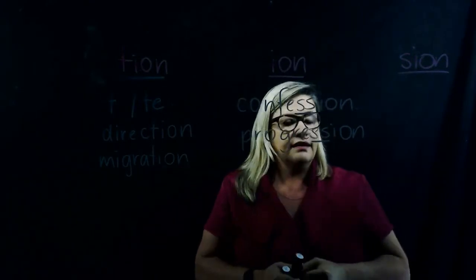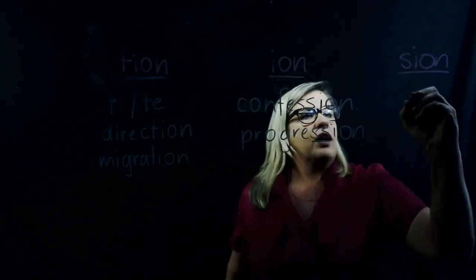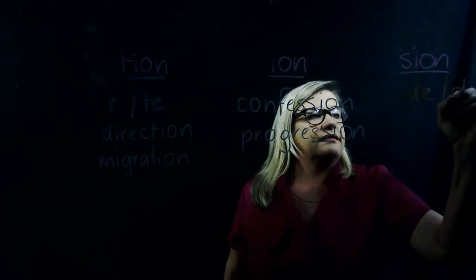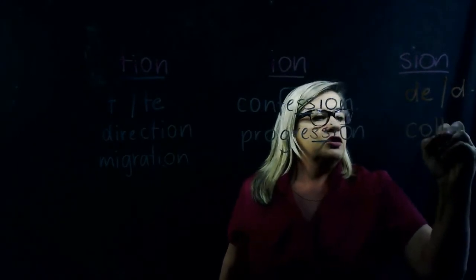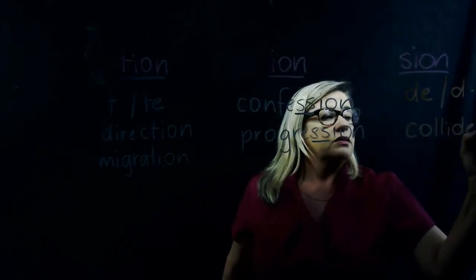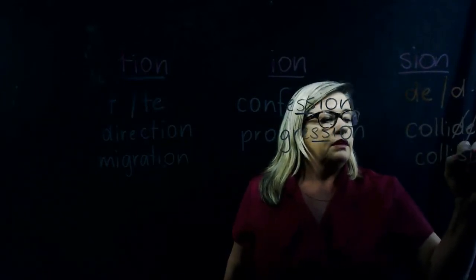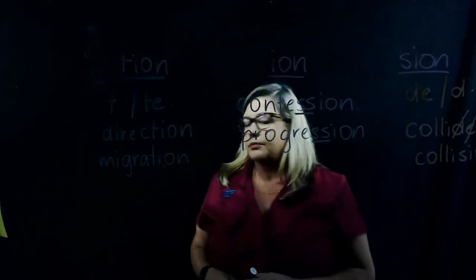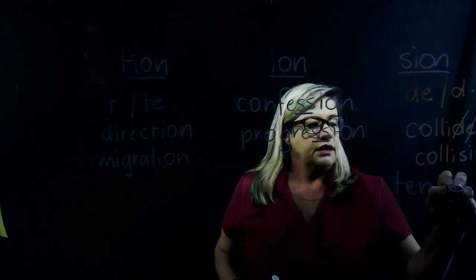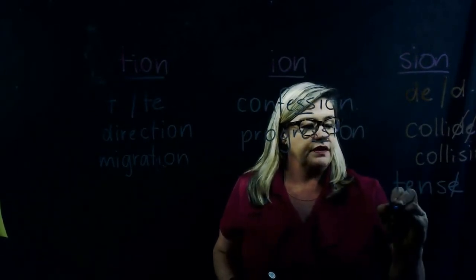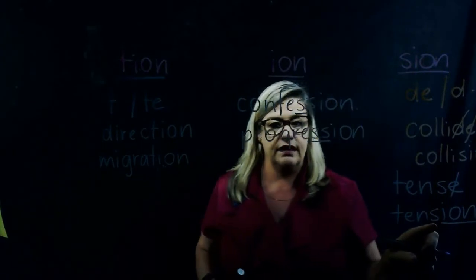For the S-I-O-N rule, we look at words that end in D-E or just D. We chop those off and add S-I-O-N. For example, collide — we chop off the D and the E — becomes collision. Another example is tense: we chop off the E and write tension, just I-O-N because the S is already there.